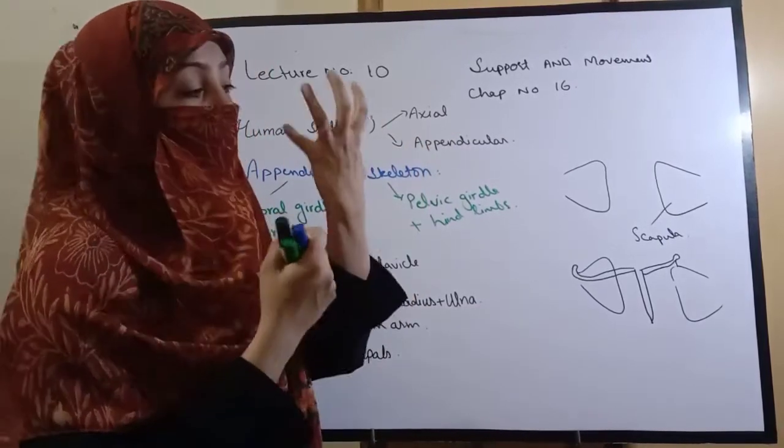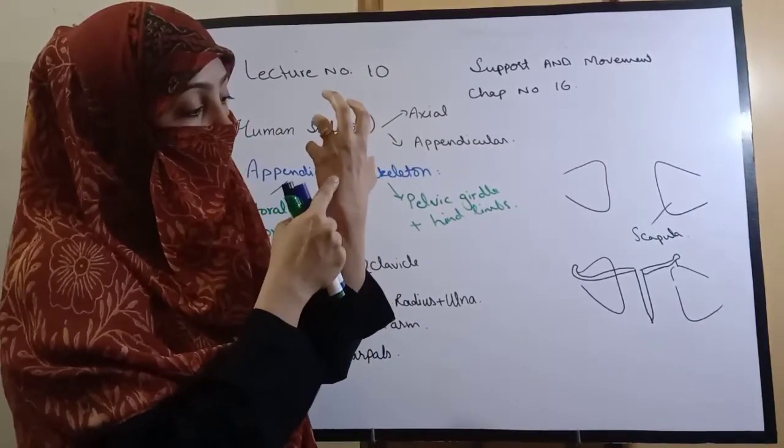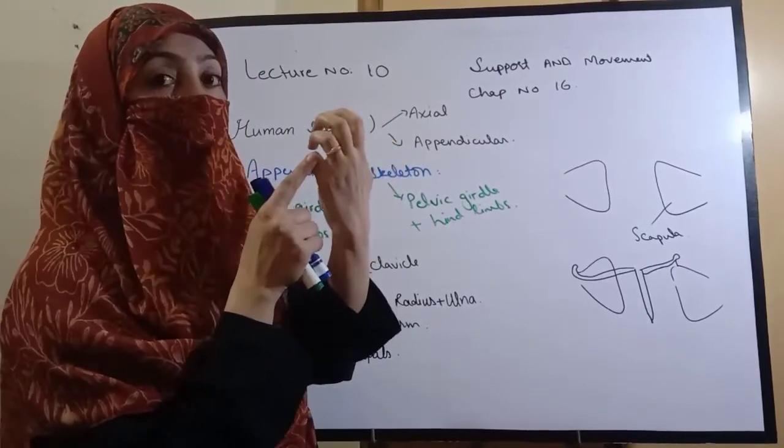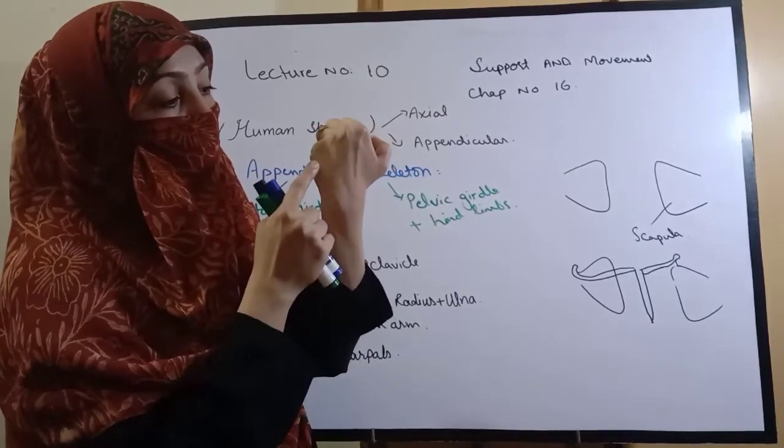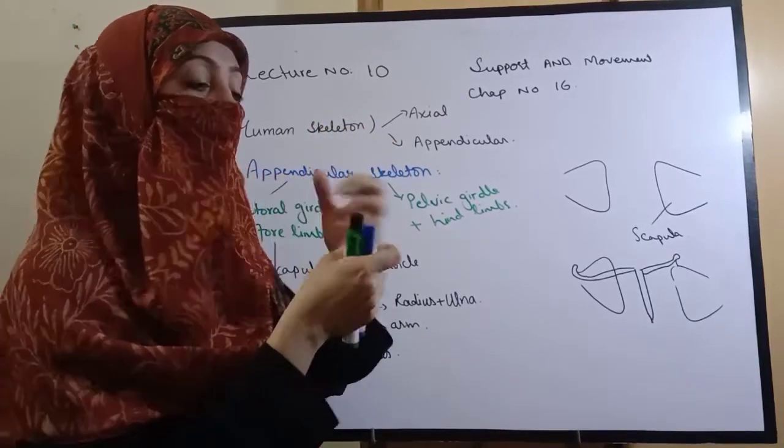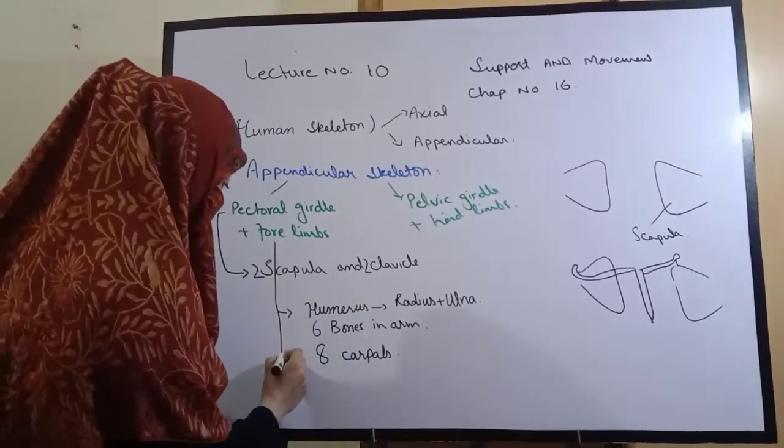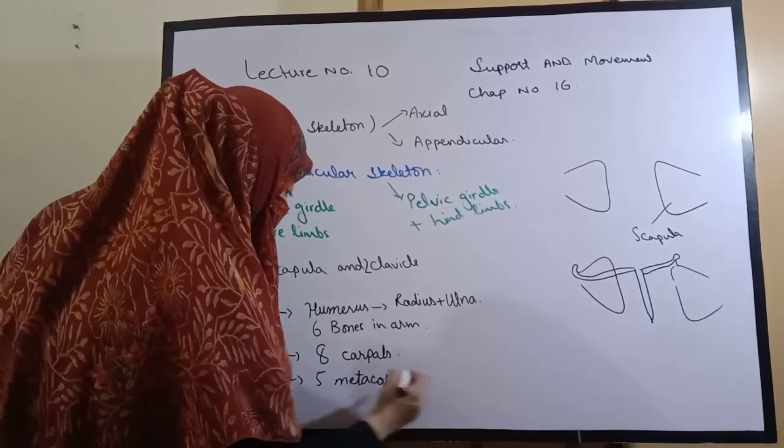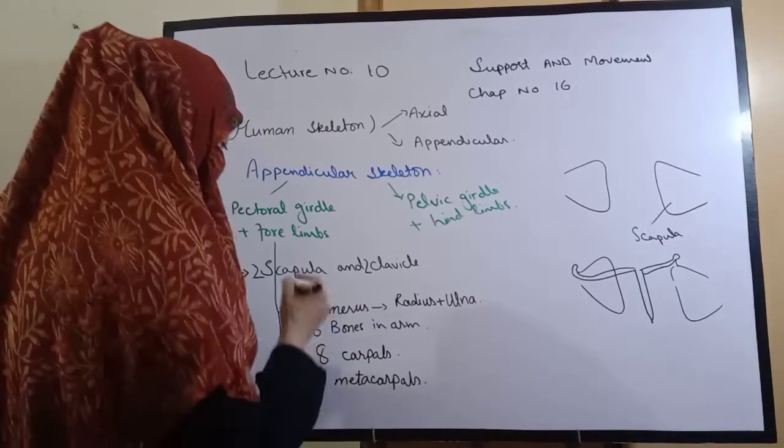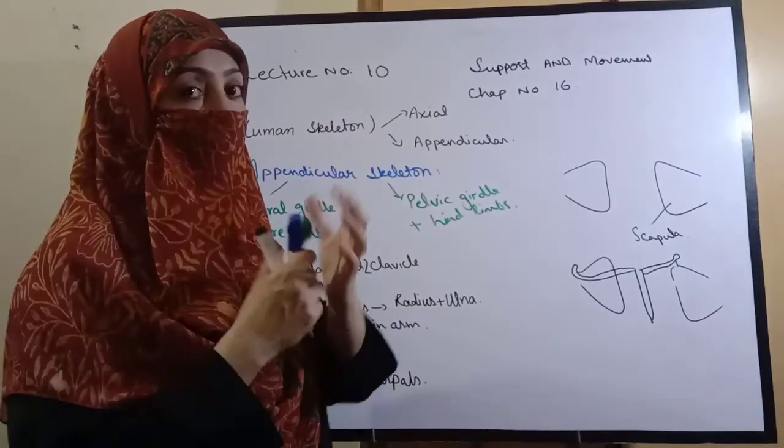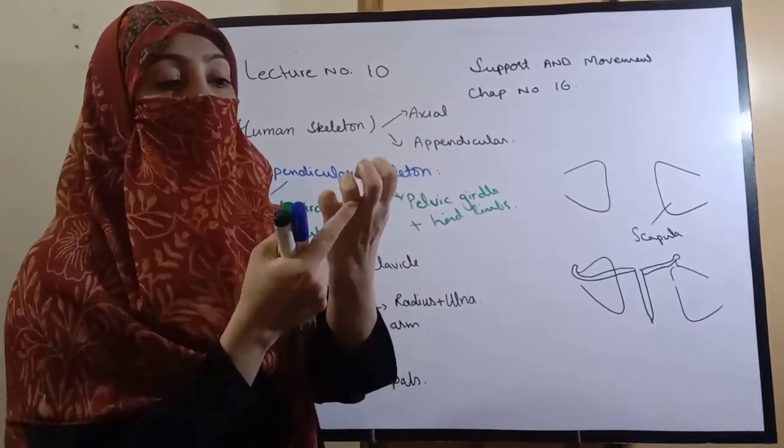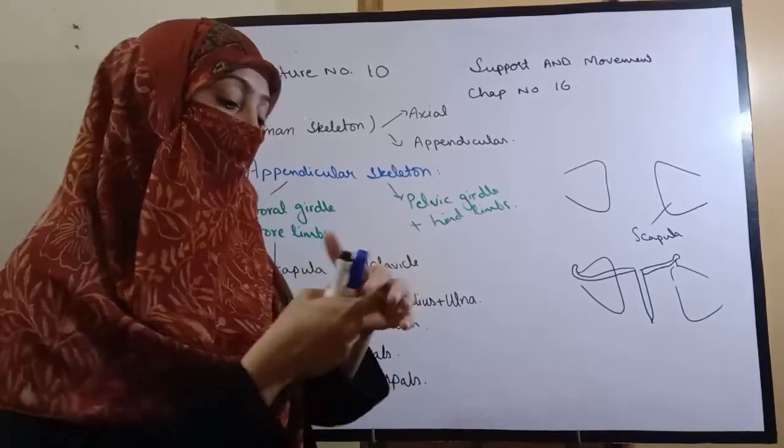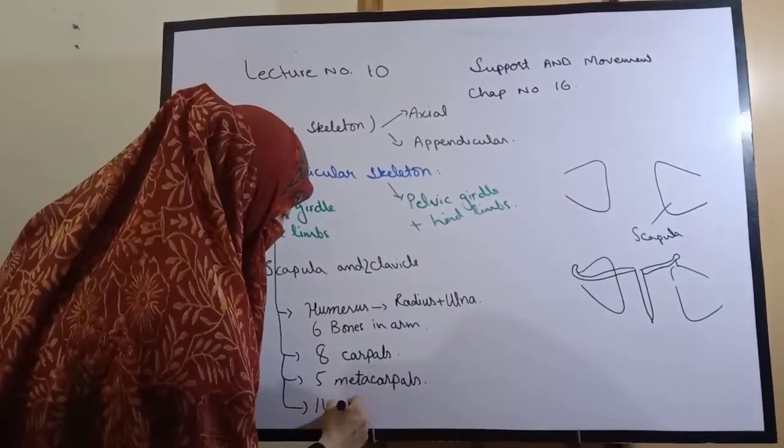After the carpals, five bones attach the fingers to the wrist - these five bones are called metacarpals. Then the bones in the fingers and thumb are called phalanges - there are fourteen phalanges in each hand.